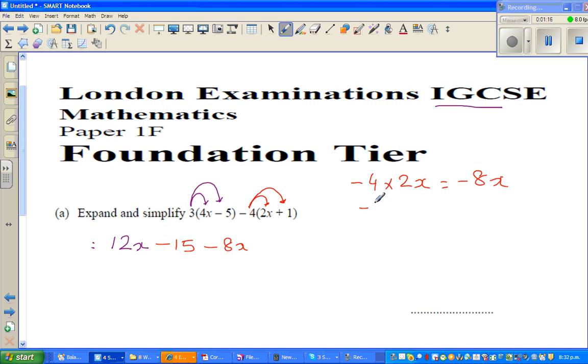And again, you're multiplying with negative 4. So this is where most of you can go wrong. Negative 4 times 1 is negative 4.